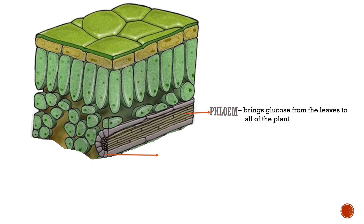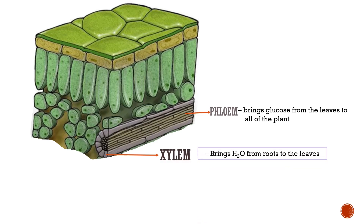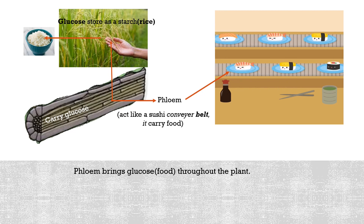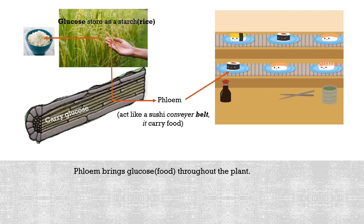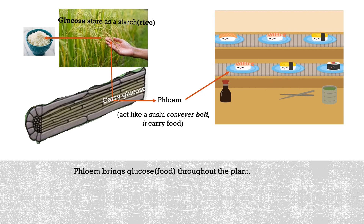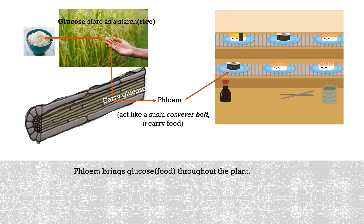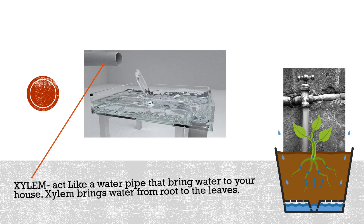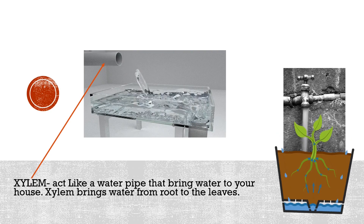After photosynthesis, phloem will bring glucose from the leaf to all parts of the plant. Xylem brings water from the root to the leaf in order to nourish it. Phloem acts like a sushi conveyor belt — it carries food. Glucose carried by phloem will be stored as starch, for example in our rice. Xylem acts like a water pipe that brings water to your house.